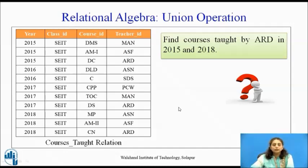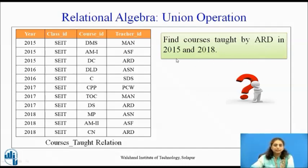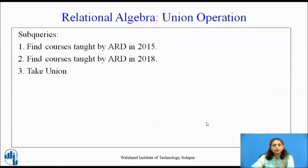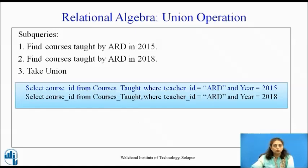Consider one example. There is a courses-taught relation with attributes year, class ID, course ID, and teacher ID. Find courses taught by ARD in 2015 and 2018. The sub-queries are: find courses taught by ARD in 2015, find courses taught by ARD in 2018, and then take the union. The equivalent SQL is: SELECT course_id FROM courses_taught WHERE teacher_id = ARD AND year = 2015, and similarly for year 2018.